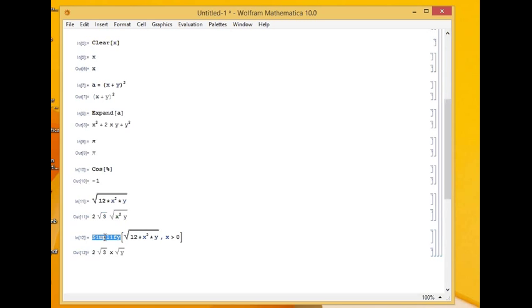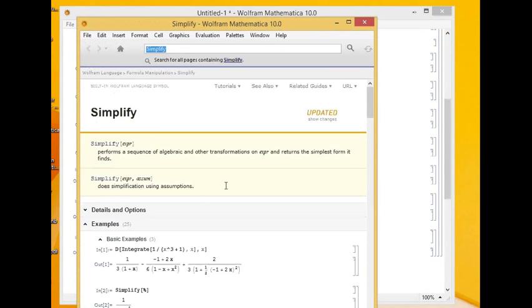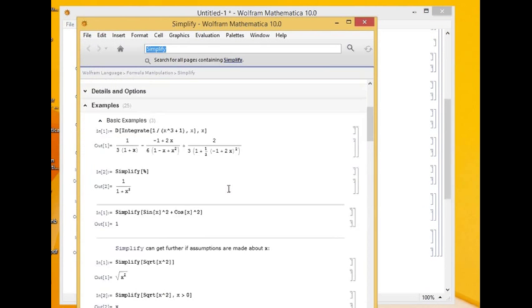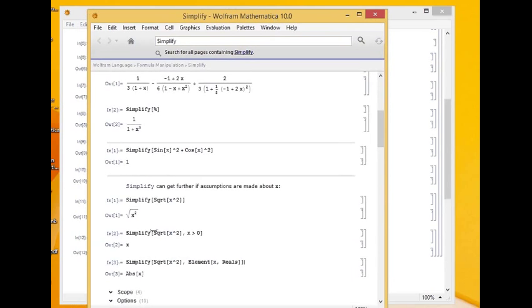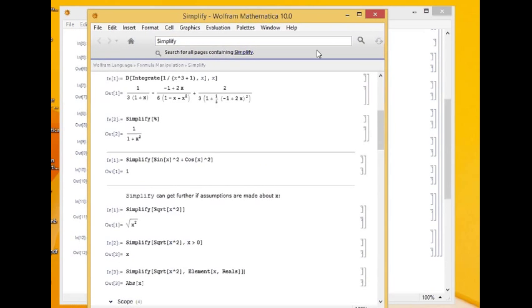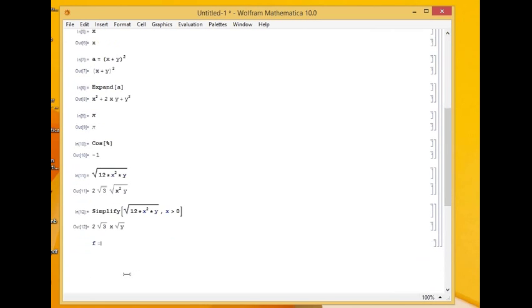Remember, each operation I am showing you is the bare bones version. You can do many more things with Simplify. You select it, right click, and go to help. You see all the different things you can do with Simplify, all the different options and arguments. All these can be accessed from this help. Mathematica has wonderful documentation. Make good use of it.